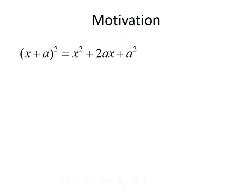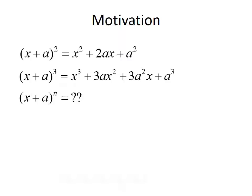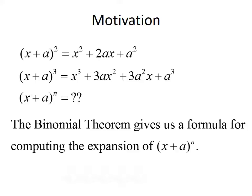Previously, we learned that the square of a binomial, x plus a squared, can be written as x squared plus 2ax plus a squared. Similarly, we learned that the cube of a binomial, x plus a cubed, can be written as x cubed plus 3ax squared plus 3ax squared plus a cubed. With that in mind, is there a generic way to write a binomial raised to the nth power? And that's what the binomial theorem does — it gives us a formula for computing the expansion of x plus a raised to the nth power.